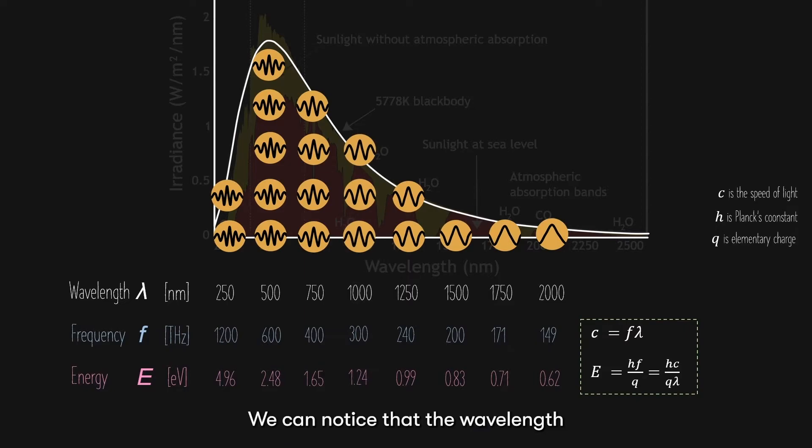We can notice that the wavelength increases from left to the right of the graph, but the frequency increases from the right to the left, due to the inverse relationship between wavelength and frequency. Energy and frequency have a proportional relationship, and hence energy increases from the right to left.